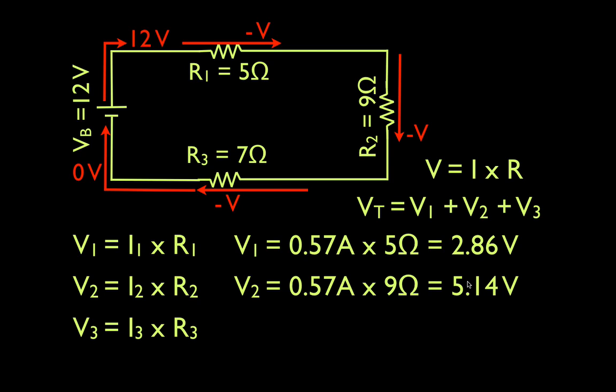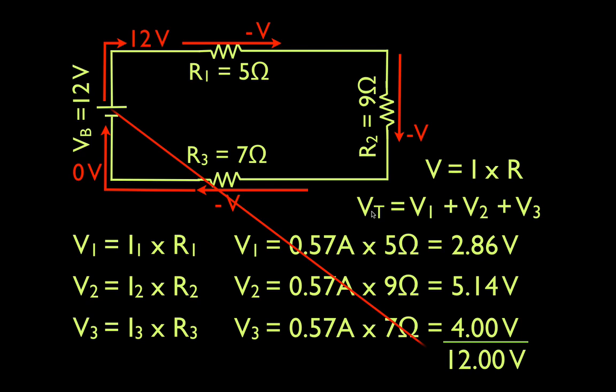We do that again. Same current, different resistance. 0.57 times 7, because this is a 7Ω resistor, we get 4.00V. Those are the voltage drops. This is the voltage gain. This is the rule right here. The sum of the drops has to equal the total gain. So we add these up, we get 12 volts, and those two numbers match, and that makes us feel good like we did that right, and I think we did.